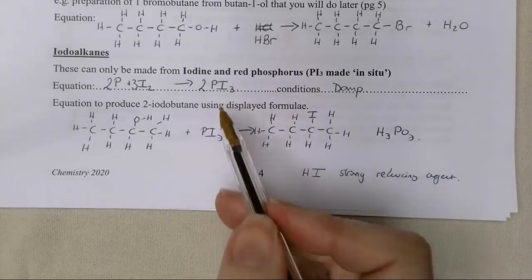That just finishes this short video for today, looking at the preparation of the halogenoalkanes from the alcohols. In the next video, we're going to have a look at the preparation of bromobutane. That is core practical six. It's quite an important practical. You need to know the experimental details of it and you need to understand the theory behind it. But we'll cover that in the next video. Until then, take care, stay safe. Bye-bye.